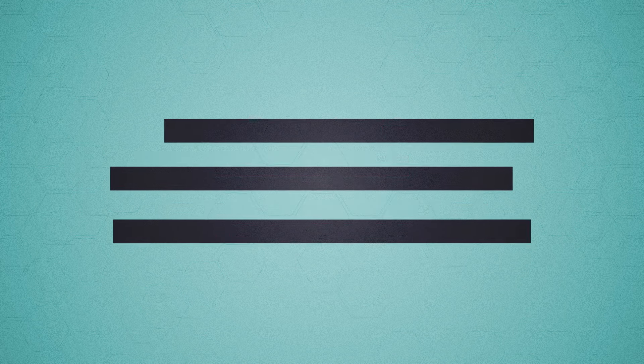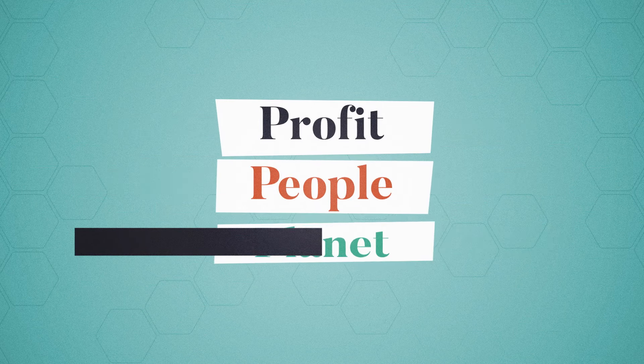The triple bottom line comprises three Ps: profit, people, and the planet.